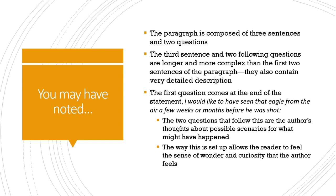You may have noted that the paragraph is composed of three sentences and two questions. The third sentence and the two following questions are longer and more complex than the first two sentences of the paragraph, and they also contain very detailed description. The first question comes at the end of the statement 'I would have liked to have seen that eagle from the air a few weeks or months before he was shot.' The two questions that follow are the author's thoughts about possible scenarios for what might have happened, and the way this is set up really allows the reader to feel the sense of wonder and curiosity that the author feels in imagining that scenario.